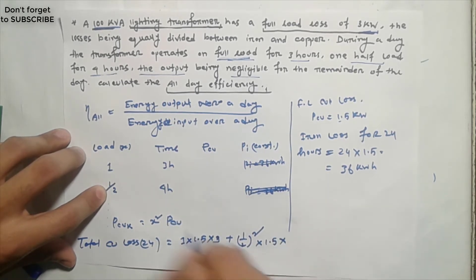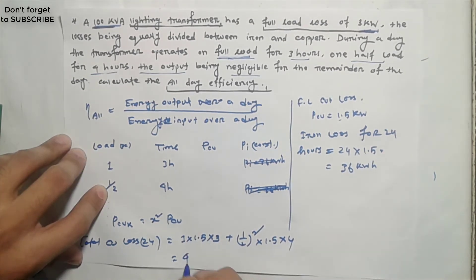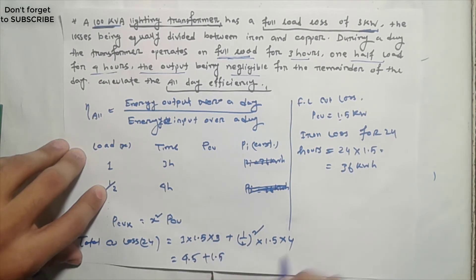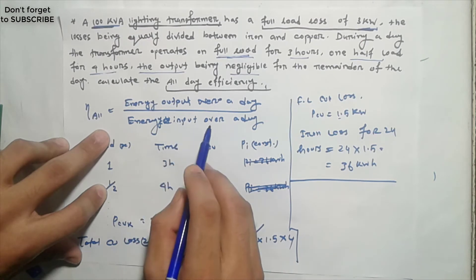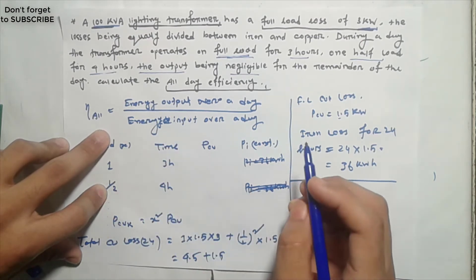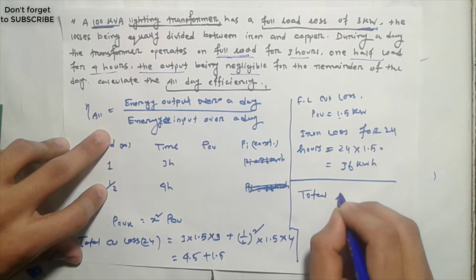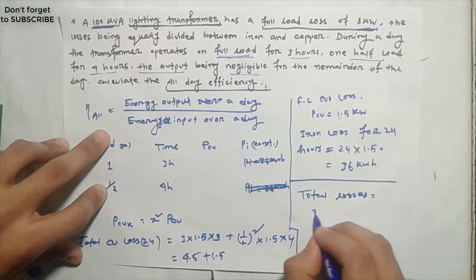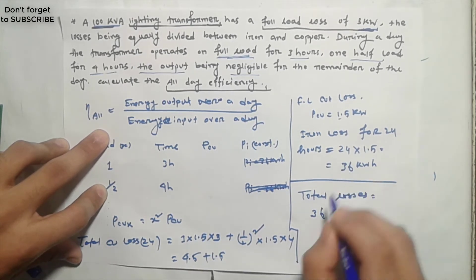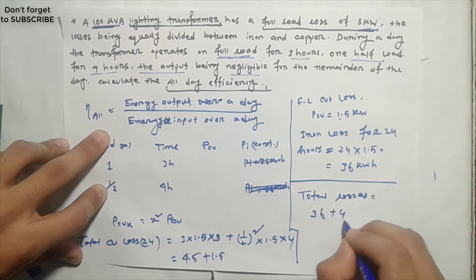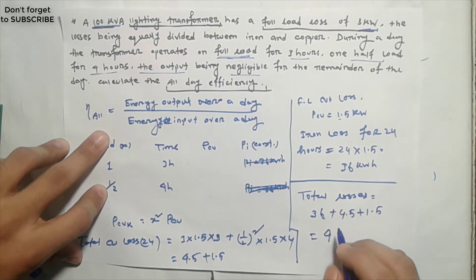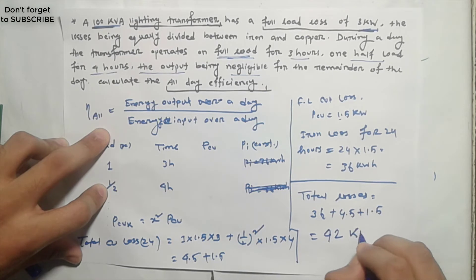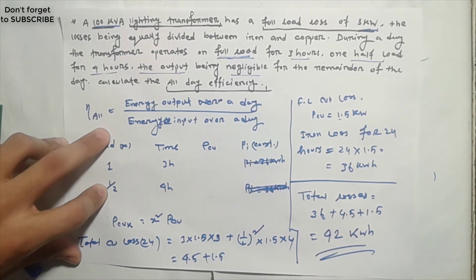Total losses: copper loss total is 4.5 plus 1.5. Total loss is 36 plus 4.5 plus 1.5, and total loss equals 42 kilowatt hours. This energy output plus energy losses gives us the denominator for all-day efficiency.